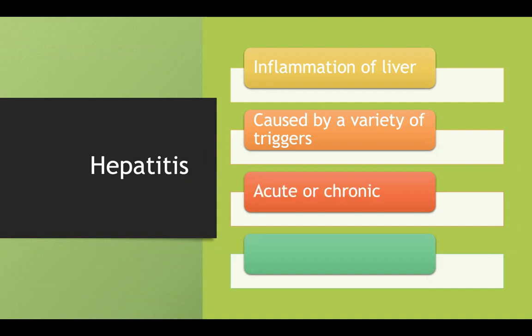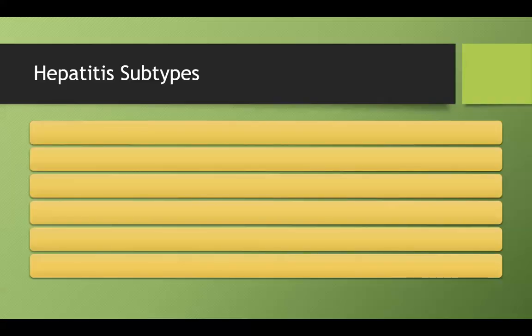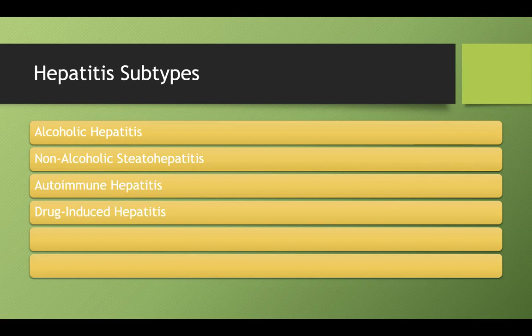Hepatitis can be acute or chronic. It could also be indolent, where it's not causing any damage, but it could also be fatal. There are several subtypes: alcoholic hepatitis, non-alcoholic hepatitis, autoimmune hepatitis, drug-induced hepatitis, ischemic hepatitis, and viral hepatitis. Let's go over each of these six subtypes in a little more detail.